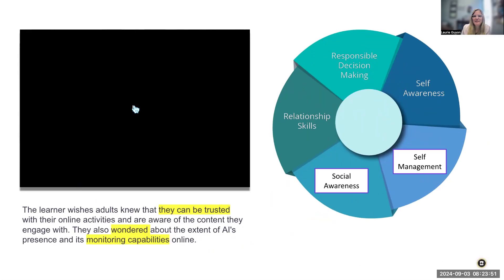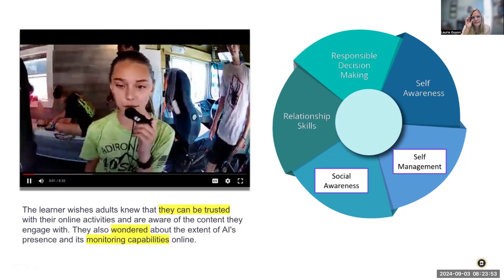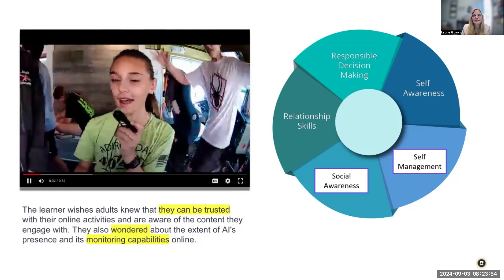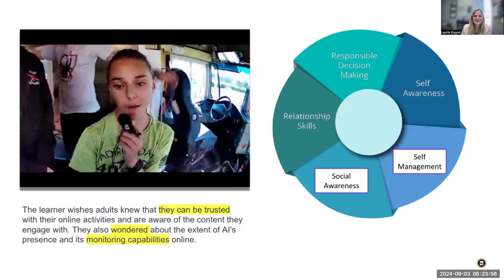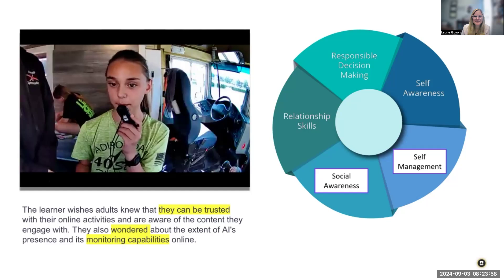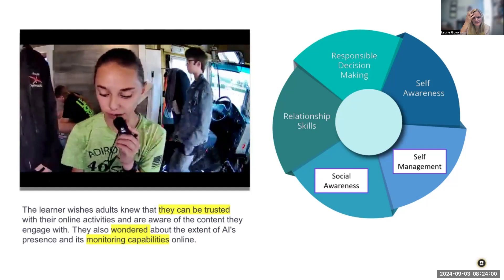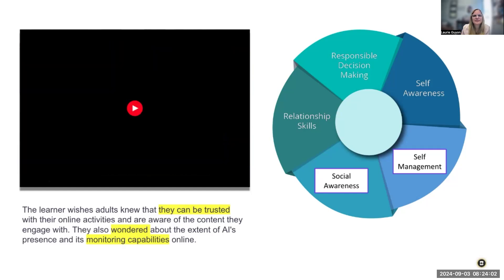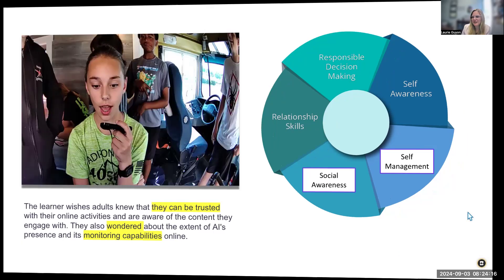Here's another student response: 'That they can actually trust me on what I watch, and that I'm not watching inappropriate things, and that I'm smart enough to not watch the dumb thing.' Here I was immediately told by the AI that the student felt they could be trusted, but they had some wonderments and wondered about some monitoring capabilities later on in the video. This really focused on their social awareness and self-management.